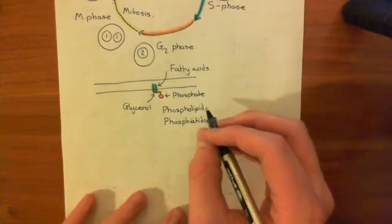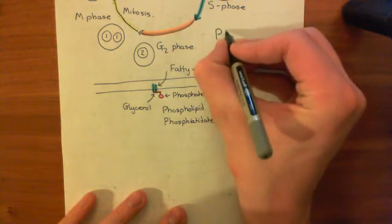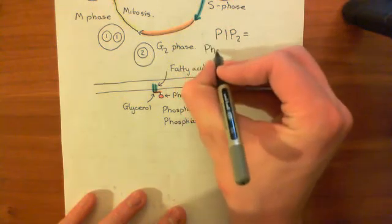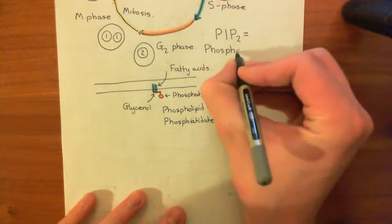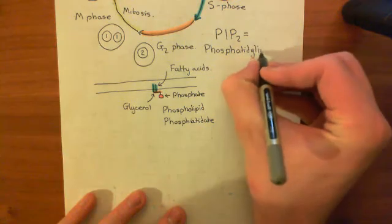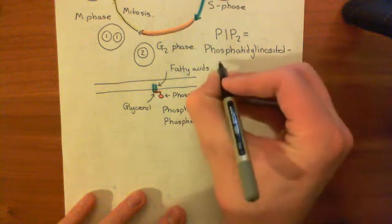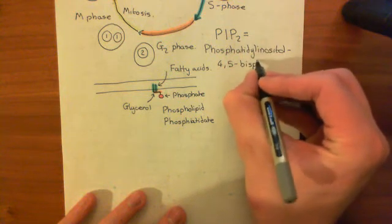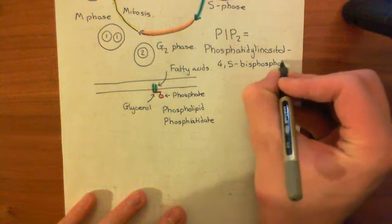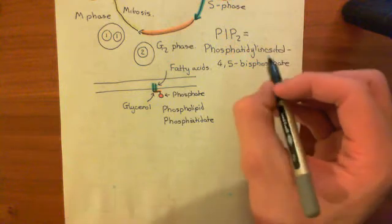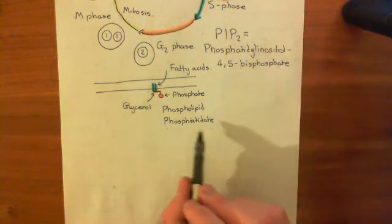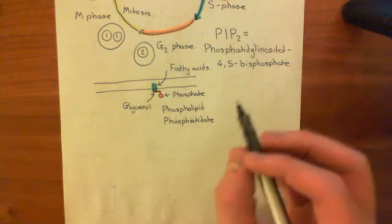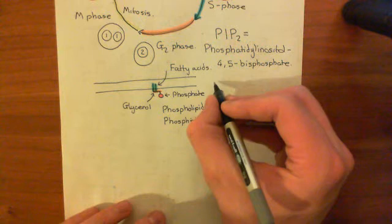Now we're going to talk about another component of the phospholipid bilayer known as PIP2 for short. In full, this stands for phosphatidyl inositol 4,5-bisphosphate — phosphatidyl inositol is what the 'PI' stands for, and 4,5-bisphosphate means it has two phosphate groups added onto it. We can deduce its structure because we know what phosphatidate is: it is a phosphatidate group bound to inositol.